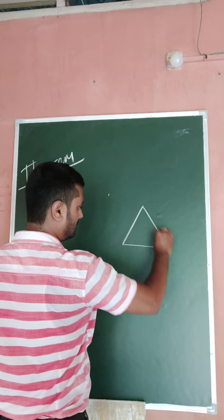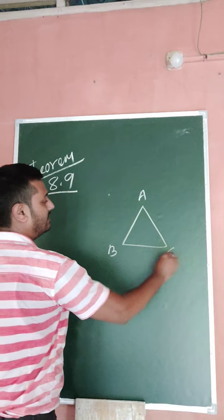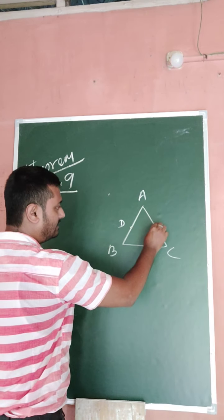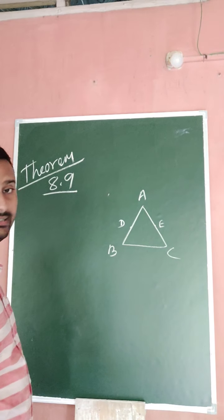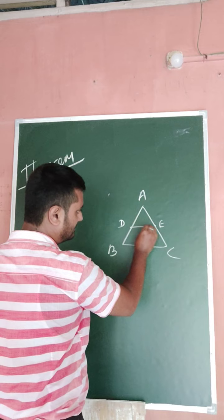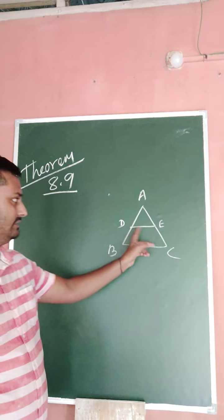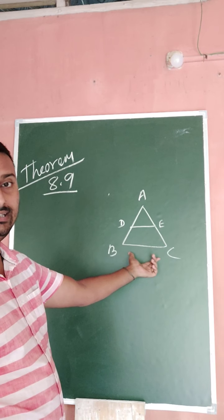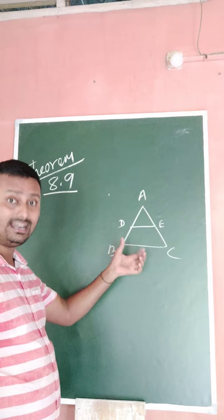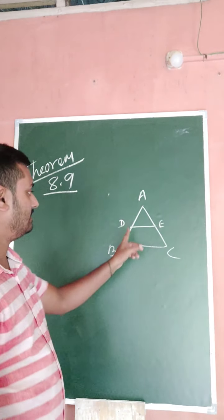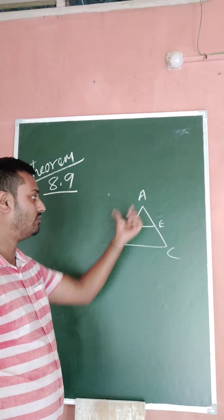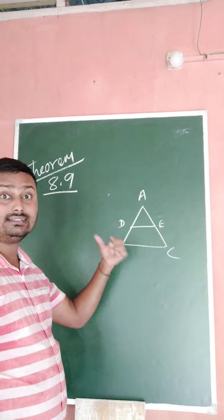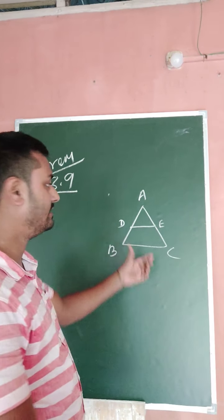Let us take the figure. Suppose ABC is a triangle. D is a midpoint of AB and E is a midpoint of BC. If you join DE, then DE is parallel to BC, and DE is equal to half of BC. The line segment joining the two midpoints of two sides of a triangle is parallel to the third side and is half of the third side.